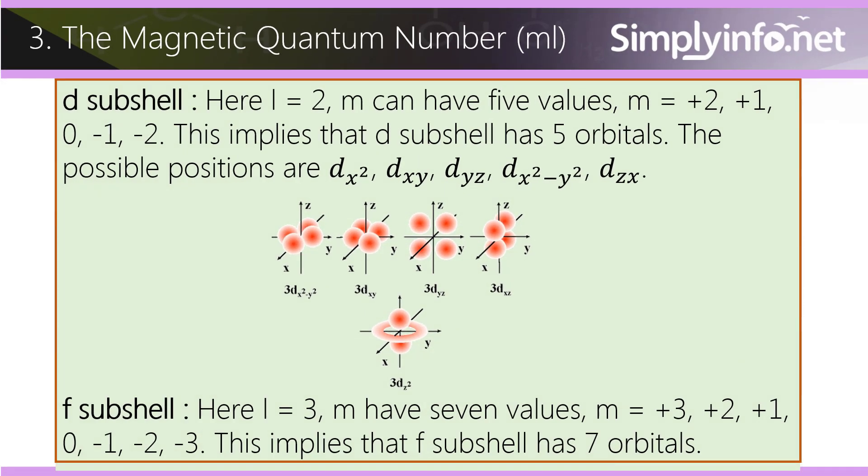d subshell: Here l equals 2. m can have five values: m equals plus 2, plus 1, 0, minus 1, minus 2. This implies that the d subshell has five orbitals. The possible positions are dx2, dxy, dyz, dx2 minus y2, and dzx.